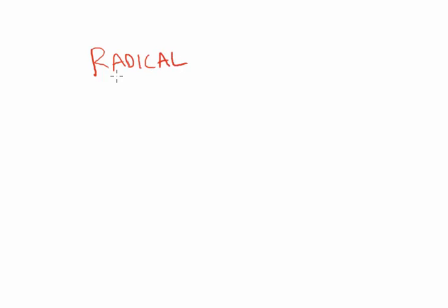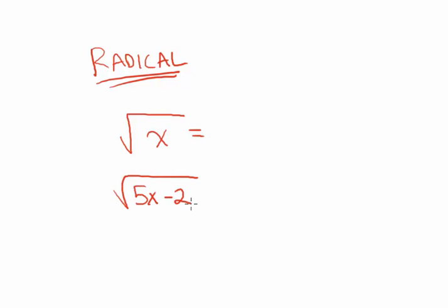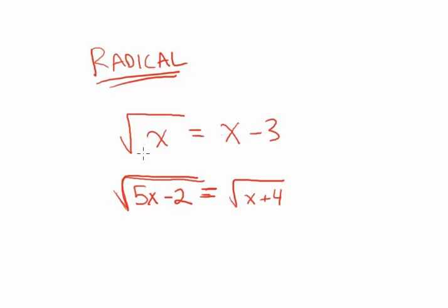Hi scholars, today we're going to talk about radical equations. That word 'radical' basically just means that we have an equation that somewhere in it is going to have a square root. This could be a square root of a variable, a square root of a more complicated expression, and we could have other things going on — an x here, a 3 here, another square root on the other side. Anything where there's an equation with a square root sign somewhere in it — that's a radical equation.